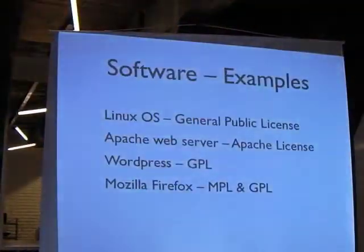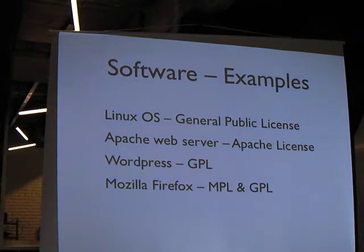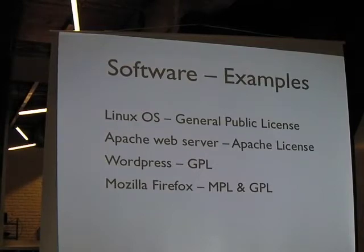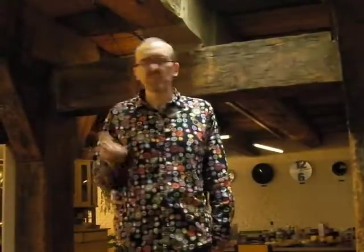Examples of open source software you've probably heard of: the Linux operating system, the Apache web server that runs large parts of the internet, WordPress, and Firefox the web browser. They use a bunch of different licenses like the General Public License (GPL), Apache, or Mozilla's public licenses.